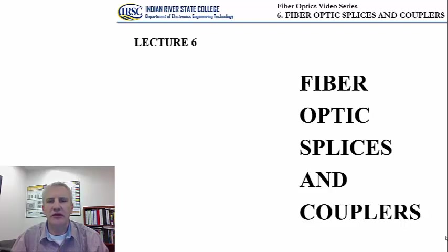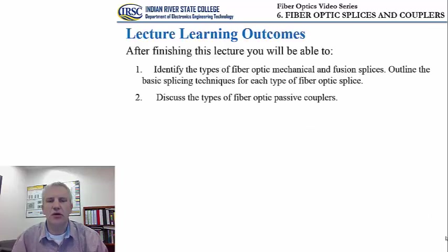Just to refresh our memory, last time we introduced fiber optic connectors, and at the beginning of the last lecture we talked about three different types of connections that exist in fiber optic links. We talked about fiber optic connectors, and then the other two types of connections would be fiber optic splices and fiber optic couplers. Today we are going to be talking about two distinct types of fiber optic splices: mechanical splices and fusion splices.